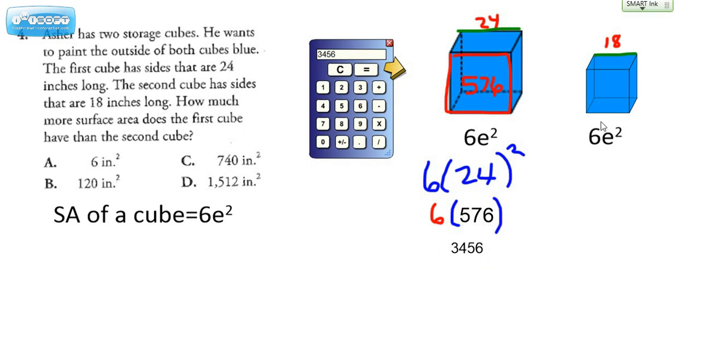Now you're going to go ahead and do the same thing for the second cube, only instead of putting in a 24, you're going to put in 18. Square the 18, find what that is, multiply it by six, and you're going to get a different number.